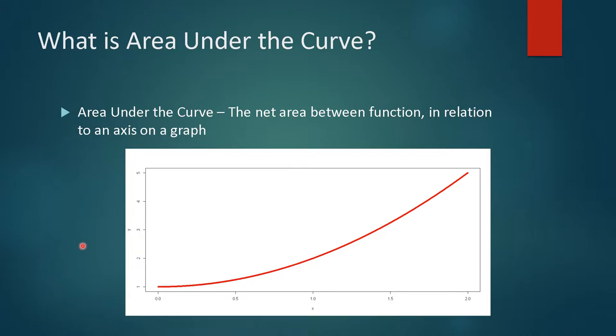Let's have a little bit more idea of what area under the curve is. Well quite simply it's the net area between a function in relation to an axis on the graph. So we have an example here where we have an exponential function actually, x squared plus one. So at zero it's just one and then at two it's two squared is four and plus one is five.